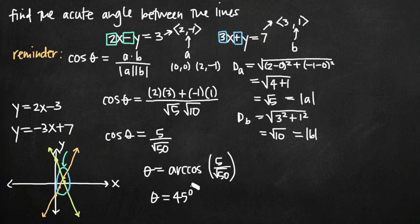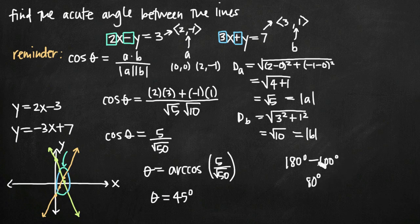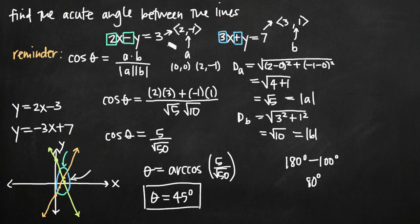As a double check, we confirm that 45 degrees is less than 90 degrees, so it is indeed the acute angle. If you ever get an answer greater than 90 degrees — say 100 degrees — you take 180 minus 100 to get 80 degrees, which would be the acute angle. In this case, 45 is less than 90, so 45 degrees is our acute angle between these two lines.